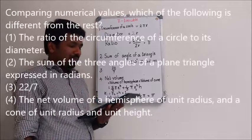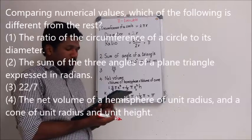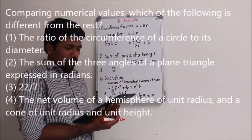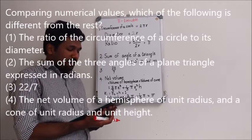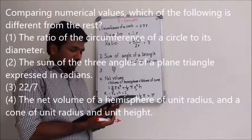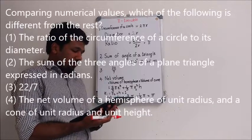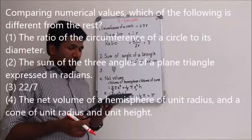The question reads like this. Comparing numerical values, which of the following is different from the rest? Option 1: the ratio of the circumference of a circle to its diameter. Option 2: the sum of the three angles of a plane triangle expressed in radians. Option 3: 22/7. And option 4: the net volume of a hemisphere of unit radius and a cone of unit radius and unit height.